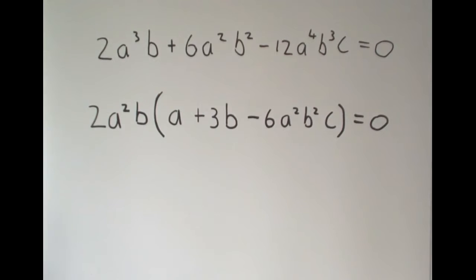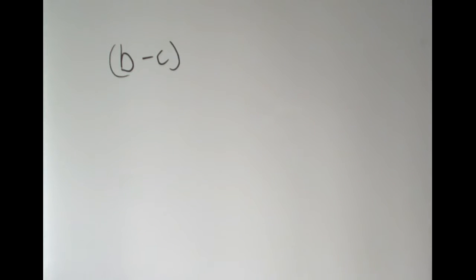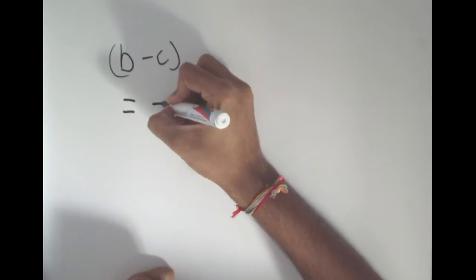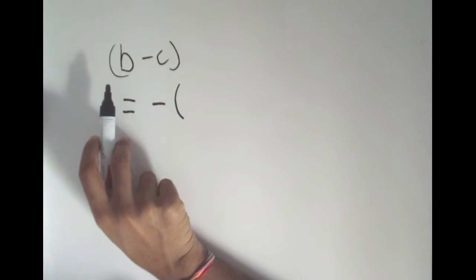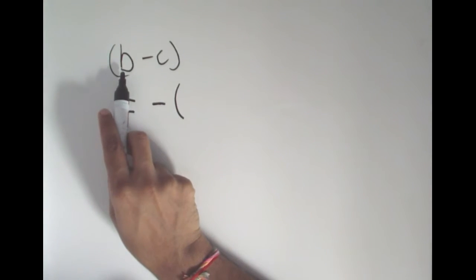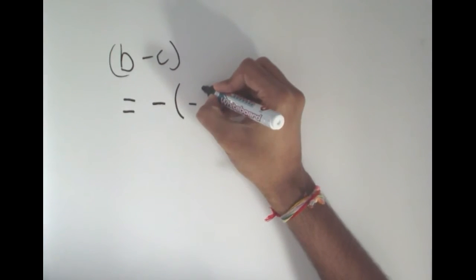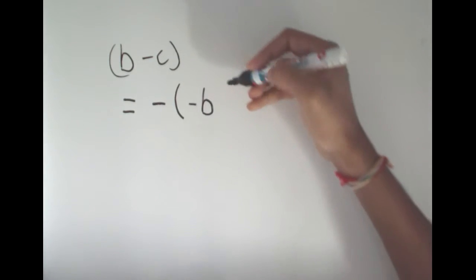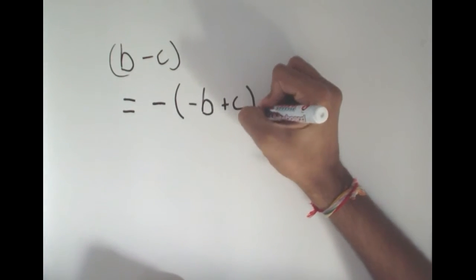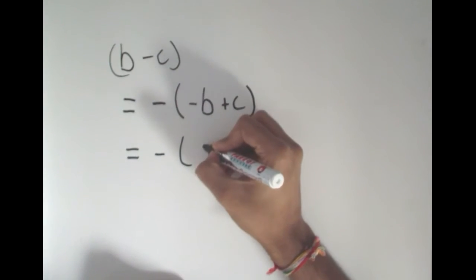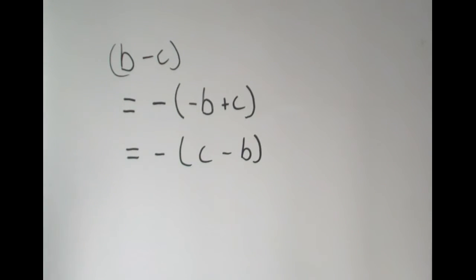Now we are going to look at an example where the common term we take out is a bracket, but first we need to look at how to make brackets look the same. If I have b − c, I can make that look like c − b by taking out a negative 1. Taking out −1 means dividing: positive b divided by −1 becomes −b, and −c divided by −1 becomes +c. Rearranging those terms, I get c − b. So I can make b − c look like c − b by taking out a −1.